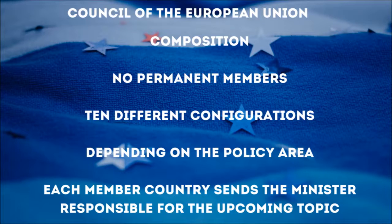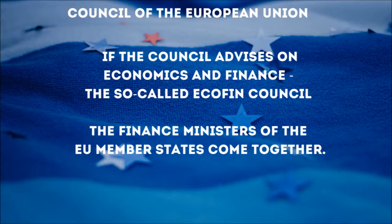What's the composition of the Council of the European Union? The Council of the European Union has no permanent members. It comes in ten different configurations depending on the policy area. For each of these meetings, each member country sends the minister responsible for the upcoming topic. For example, if the Council advises on economics and finance — the so-called Ecofin Council — then the finance ministers of the EU member states come together.